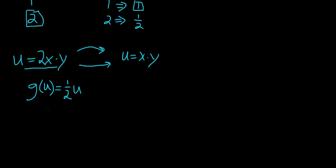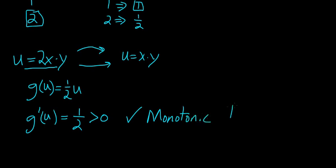The way that we test after we have written g(u) to see if it's a monotonic transformation is we take the derivative of the g(u) function with respect to u. In this case, that's going to be equal to just 1 half. If the derivative of the g(u) function is greater than 0, it means that yes, it is a monotonic transformation.